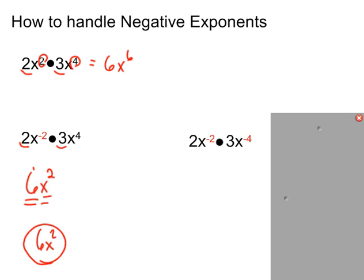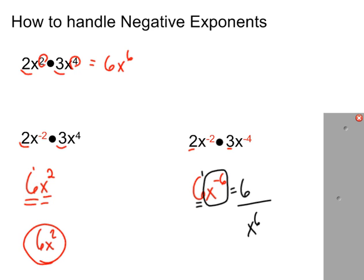When we get negative 2 plus negative 4, we get negative 6. Multiply the coefficients: 2 times 3 is 6. The coefficient is happy — it's got a positive exponent. But x to the negative 6th is not happy, so we draw the fraction bar and move it underneath. The final answer is 6 over x to the 6th. That's how we handle multiplication when we see negatives: multiply coefficients, add exponents, then check if everybody is happy and fix any negative exponents.